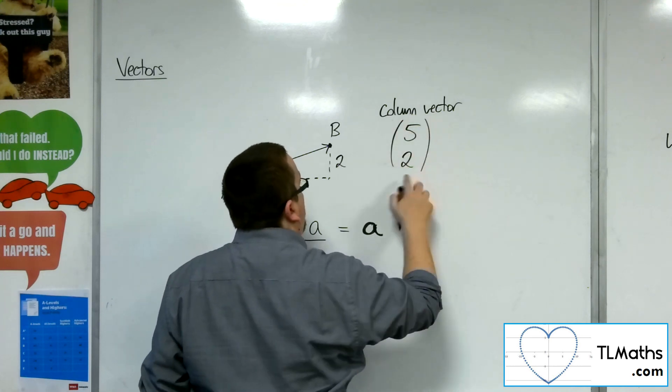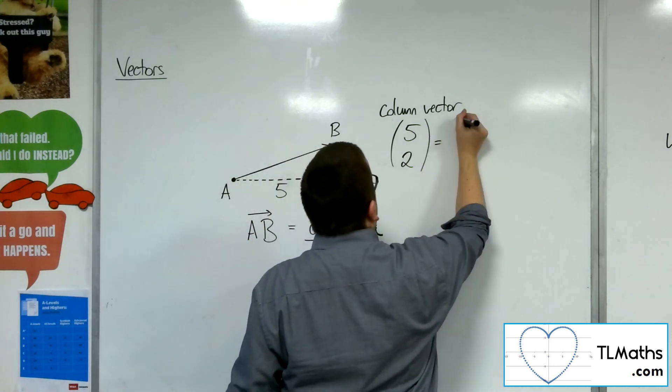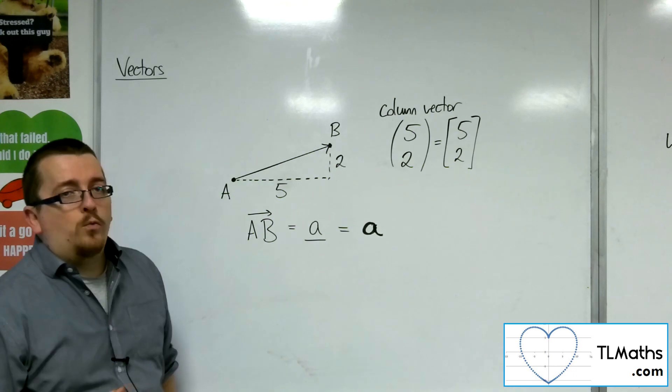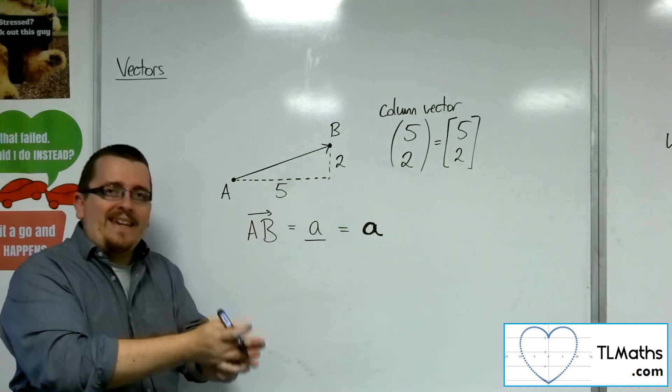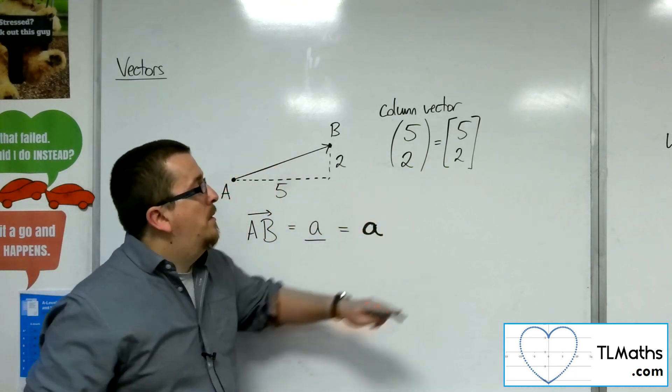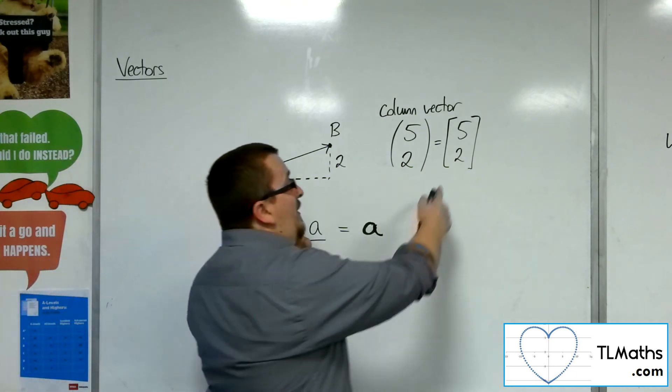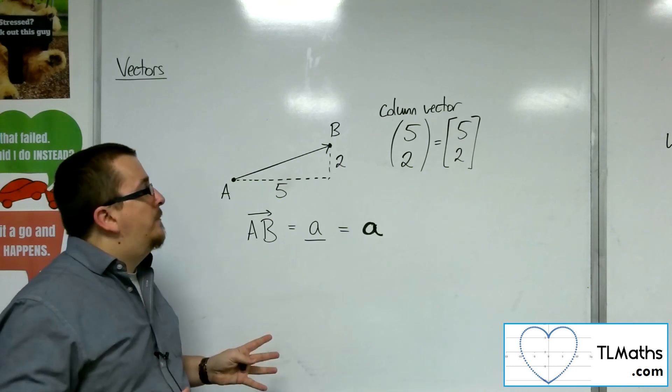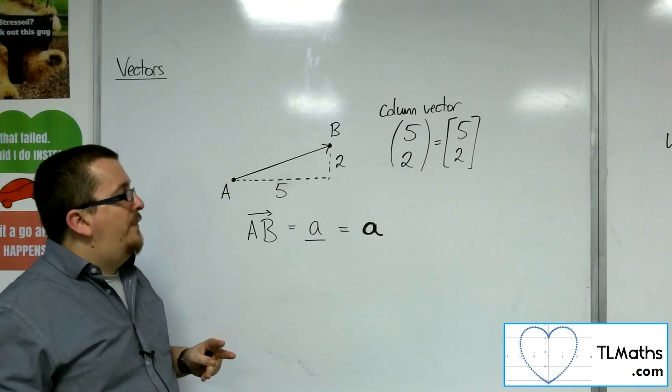Now, you can write that using curved brackets or you can write that using square brackets. It doesn't matter which you use. Some examples will stick to a particular notation. Some will stick to that one. Some may use that one. I invariably end up using this one. But as I said, it doesn't matter which one you end up using. That's one way of writing down a vector.